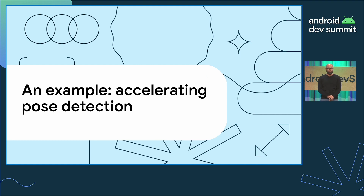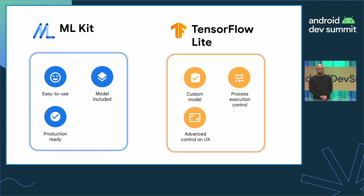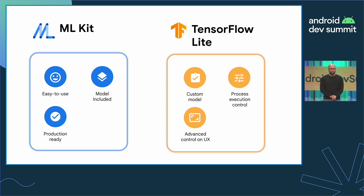Let's now zoom in and see how acceleration can be helpful in a concrete example. If you want to run machine learning inference on Android today, there are several options. If you have machine learning expertise and need advanced control over the user experience or execution, you can use TensorFlow Lite. On the other end, if you don't have ML experience and want an easy-to-use solution, you can look at the ML Kit SDK, which is built on top of TensorFlow Lite and offers ML-enabled APIs optimized for mobile and production-ready.